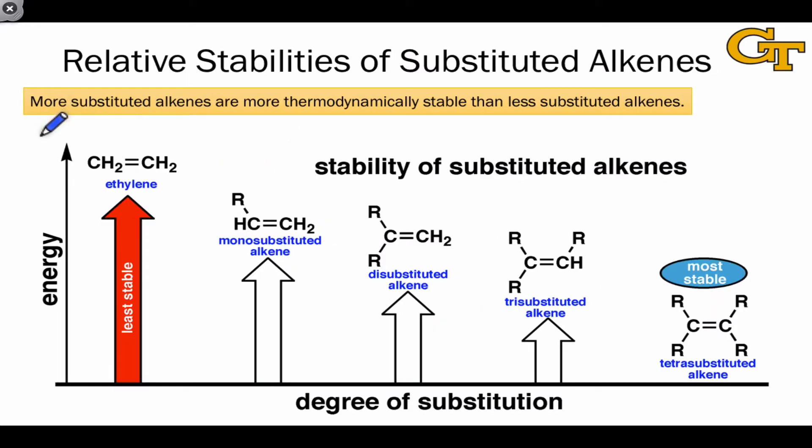The key general principle to understand here is that more substituted alkenes—that is, alkenes with more alkyl groups linked to the sp2 hybridized carbons—are more thermodynamically stable than less substituted alkenes. This image shows you the trend on an energy diagram where high energy represents low stability and low energy represents high stability.